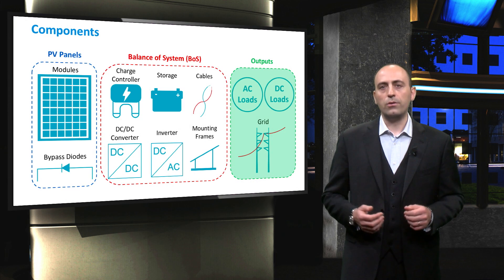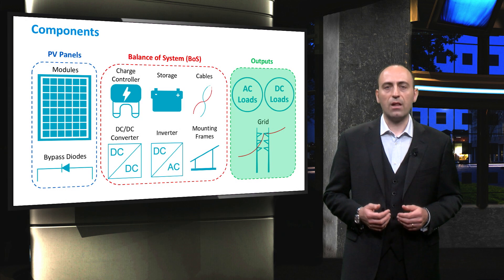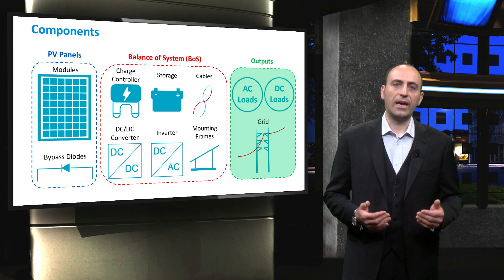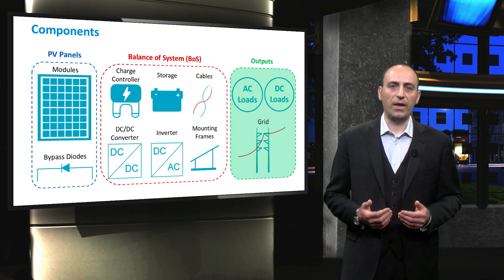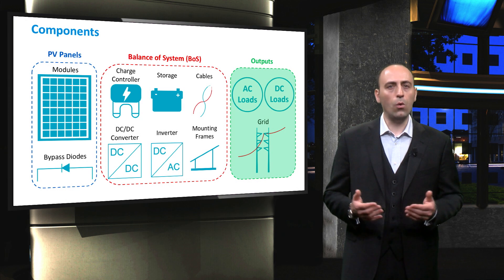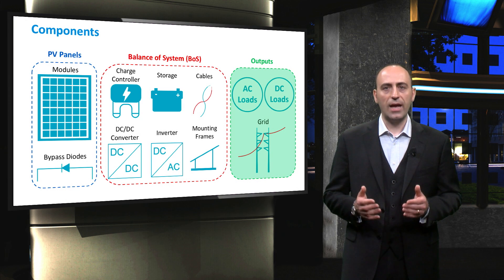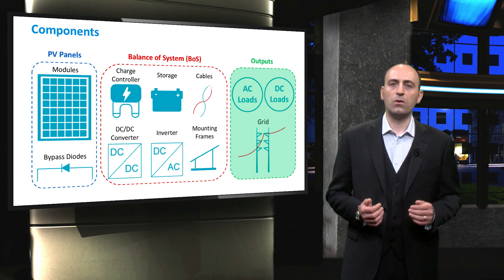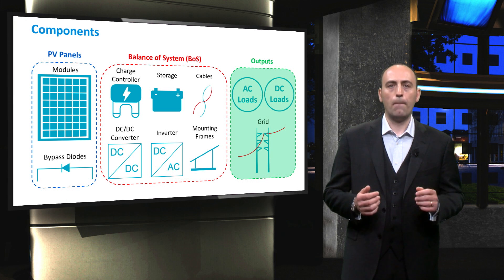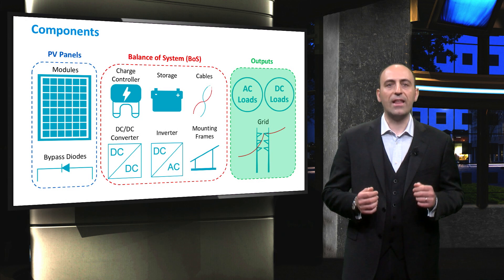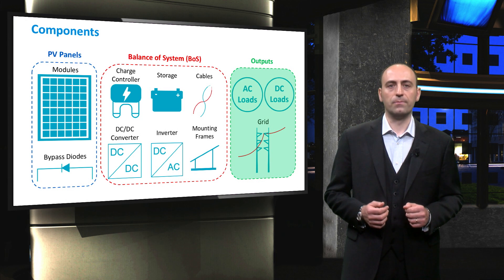Though not part of the PV system itself, the outputs have to be taken into account during the design phase. Outputs include all the connected electric appliances and the grid. They must be considered in terms of required voltage levels, power consumption in case of loads, and whether AC or DC current is needed.